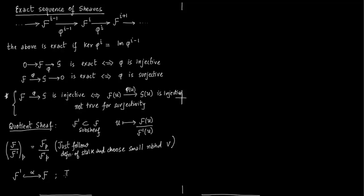Consider a map α from F′ to F. The image of α is a sub-sheaf of F. The cokernel of α is a sheaf, and the kernel of α is a sub-sheaf of F′. Also notice that if you take the image of α as a sheaf and then take the direct limit around point p — equivalently, take the map α_p from F′_p to F_p — these two are equal.